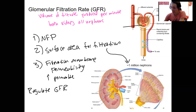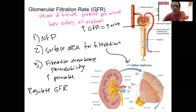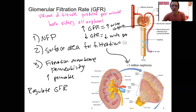So GFR is going to be regulated by both intrinsic regulation in the kidney and extrinsic regulation by the nervous and endocrine systems. Why do we want to regulate this? It determines urine production — the volume of filtrate produced. A high GFR means higher urine output. A low GFR means less urine output. So it's the first place where we can regulate urine production, though we also regulate reabsorption and secretion as well.